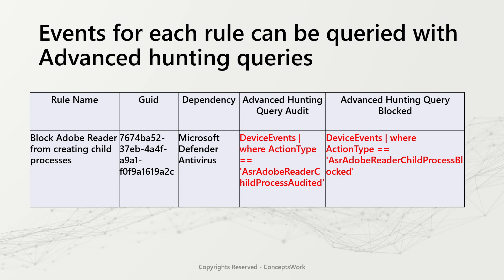If you want to view rule-specific events, you can use these two queries. Access the DeviceEvents table and use the ActionType attribute to query values like 'ASR Adobe Reader Child Process Audited' or 'ASR Adobe Reader Child Process Blocked'.